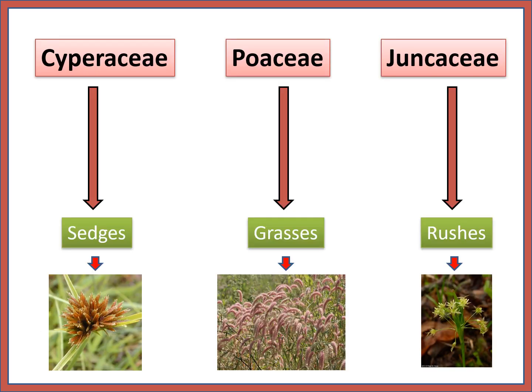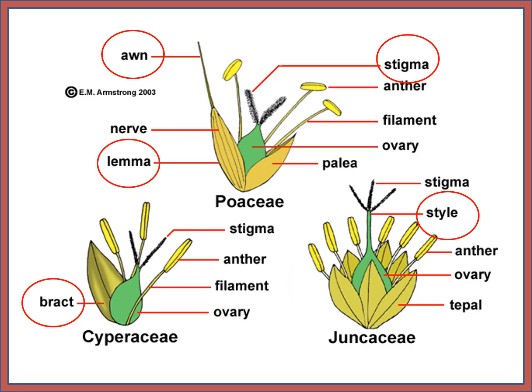Cyperaceae means sedges, Poaceae means grasses, Juncaceae means rushes. You can observe here the flower characters. For Poaceae you can observe the lemma, for Juncaceae you can observe the palea, for Cyperaceae you can observe the bract.